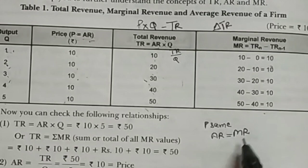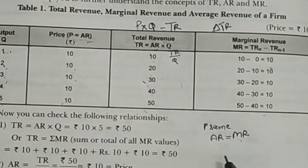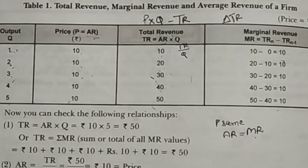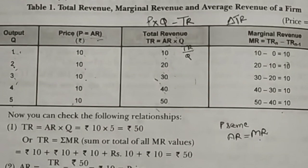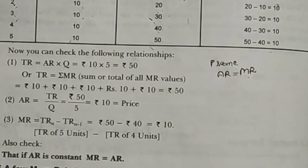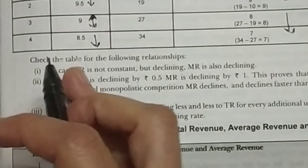This case explains perfect competition, where the assumption is that there is no change in price. That is why AR is always equal to MR under perfect competition. I will show you this with the help of a diagram as well. Now come to this second table, which shows the relationship among AR, TR, and MR.